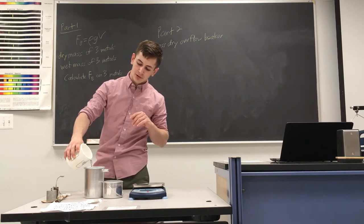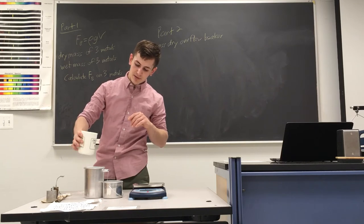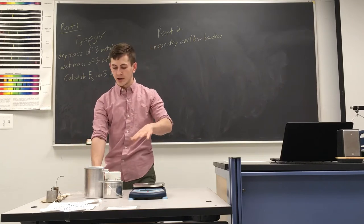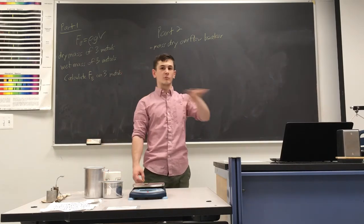So we need to pour water in here until a little bit comes out the spout, and then we need to let it drain until no more is coming out. That's how we ensure the water line is equal with the spout.